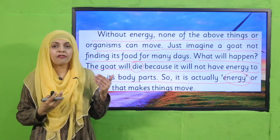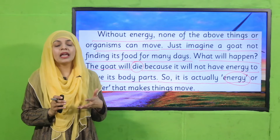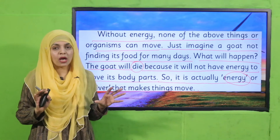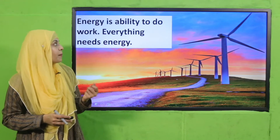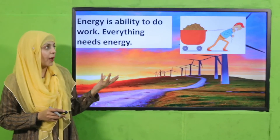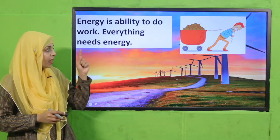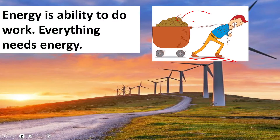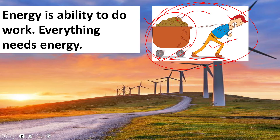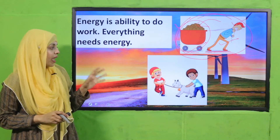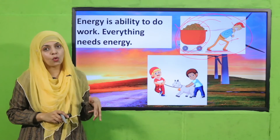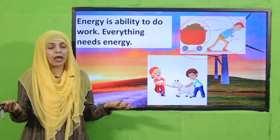Different non-living things like a fan, AC, car, and motorbike need external energy for movement. Everything around us needs energy for movement and performing different functions. Here you can see a man pushing a cart — the man needs energy and the cart also needs energy. One is living and the other is non-living, but both need energy for working and moving. Here you can also see three living things — a boy, a girl, and a goat — all needing energy for movement and performing different functions.